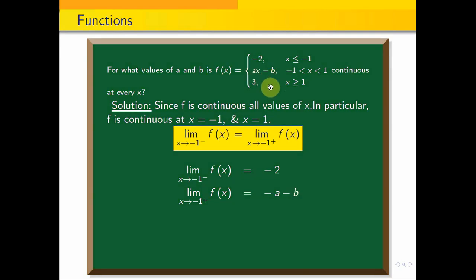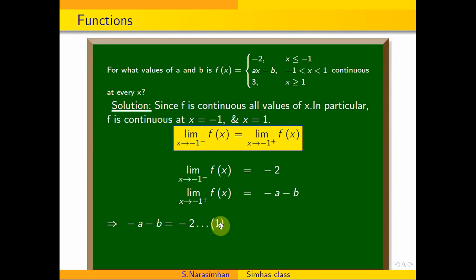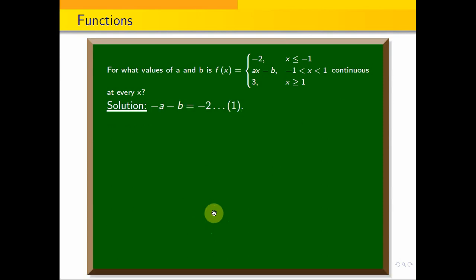Setting these two values equal, we get minus a minus b equals minus 2. This is equation 1. Let us now check the continuity at x equals 1.